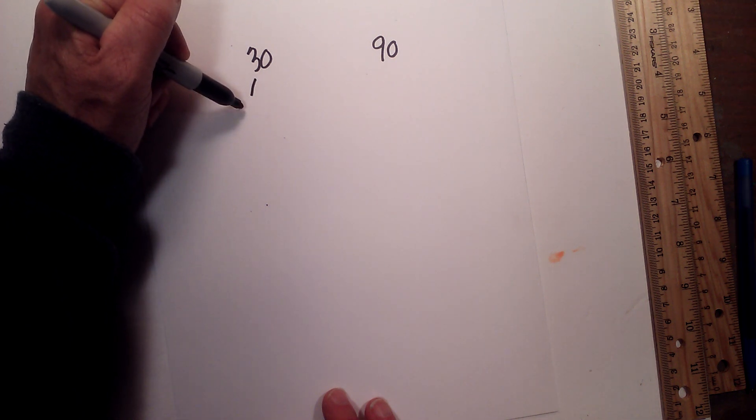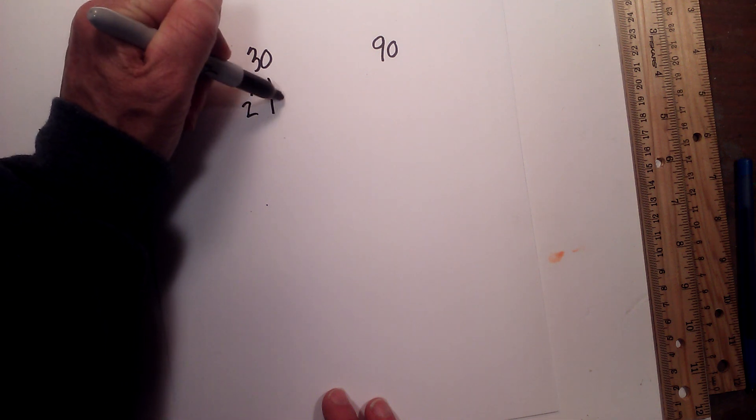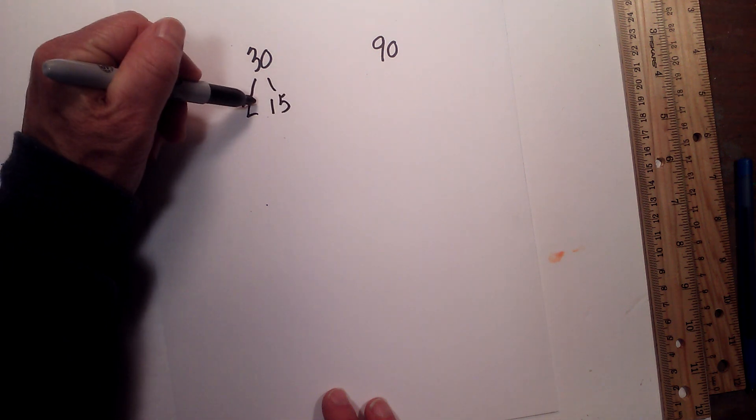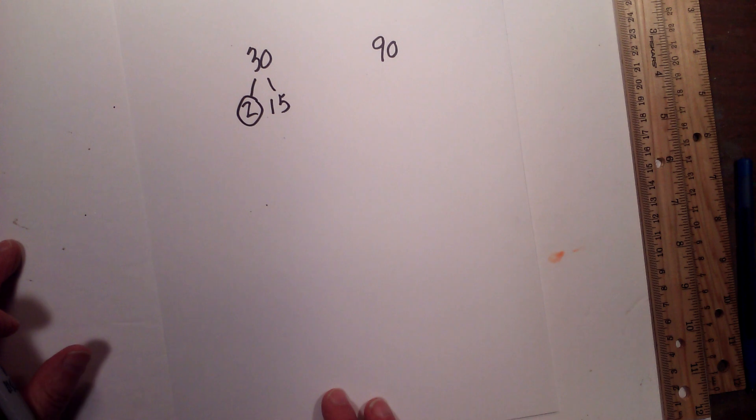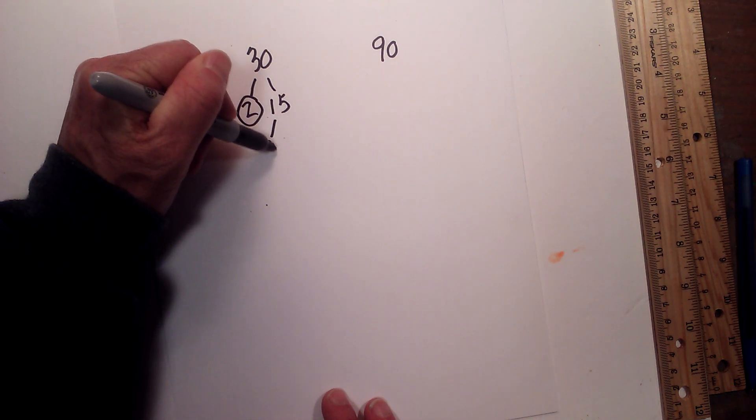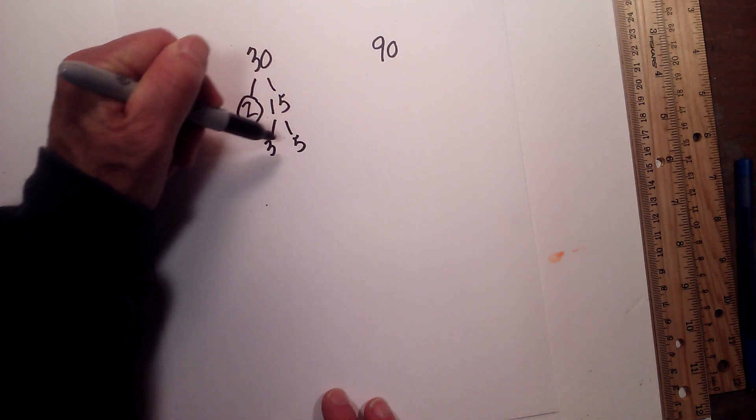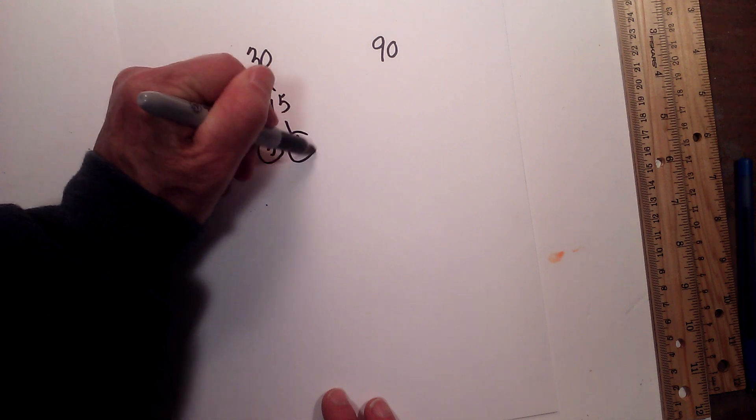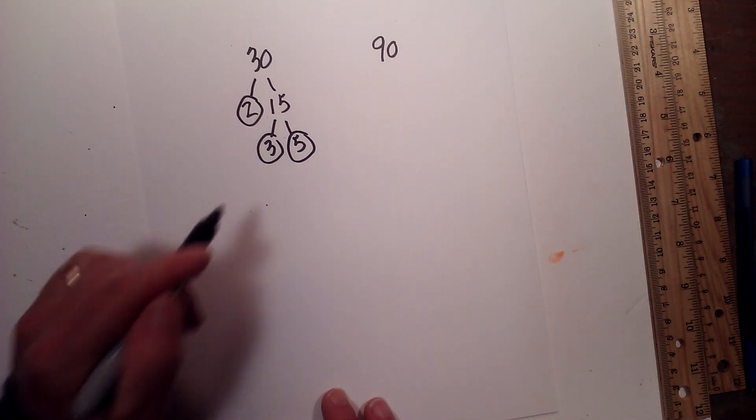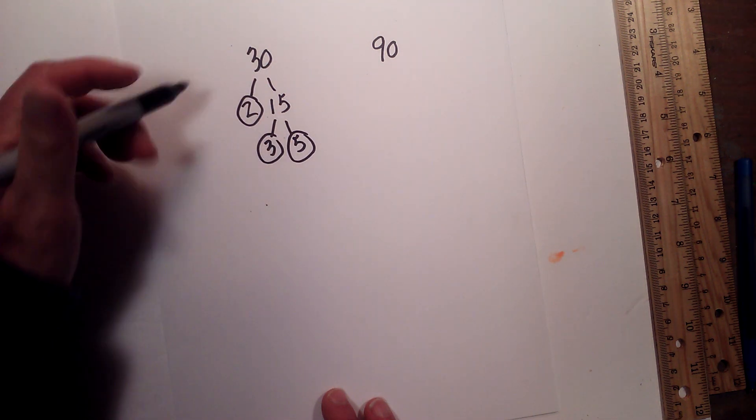First we can go 2 times 15 equals 30. I will circle the 2 because it is prime, and now 3 times 5 equals 15. I will circle both of these because they are prime, so we are now down to prime numbers and we are finished.